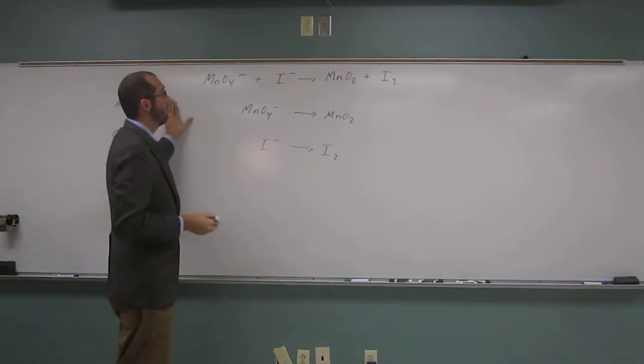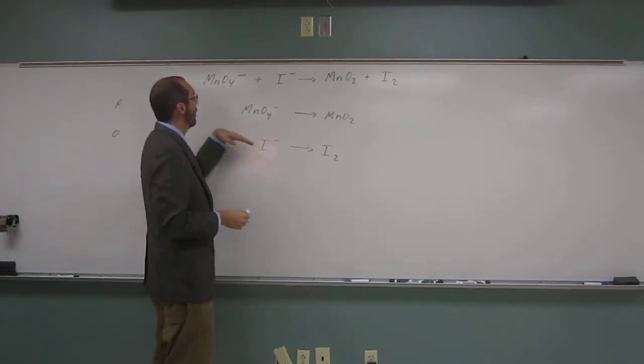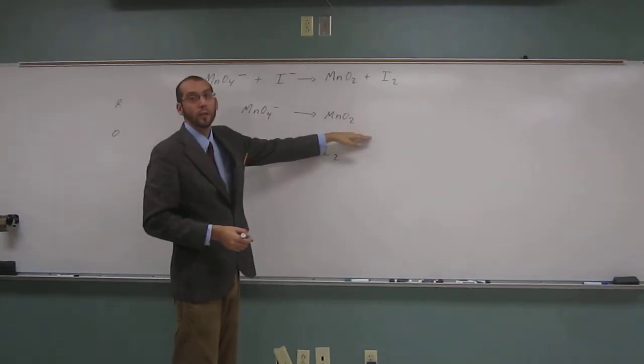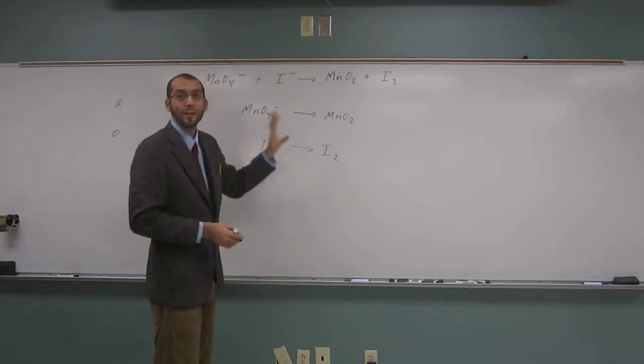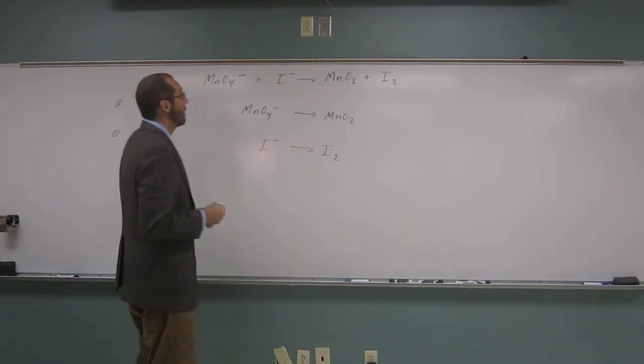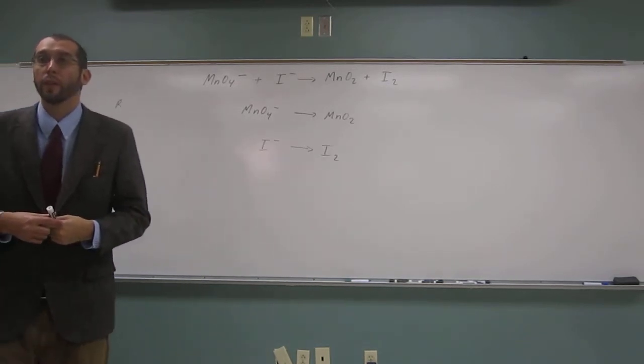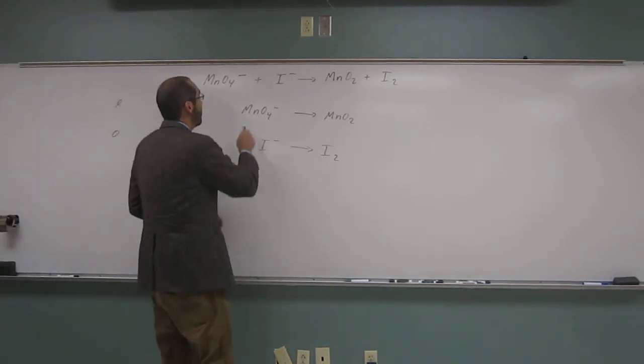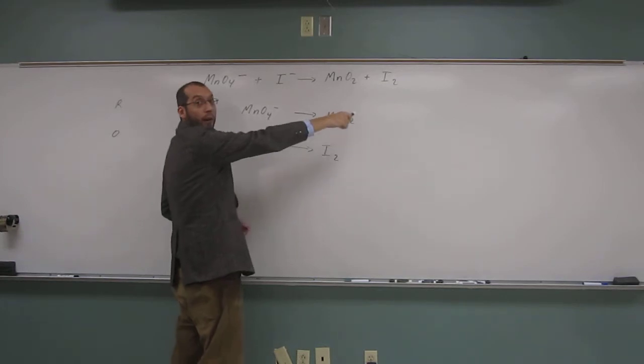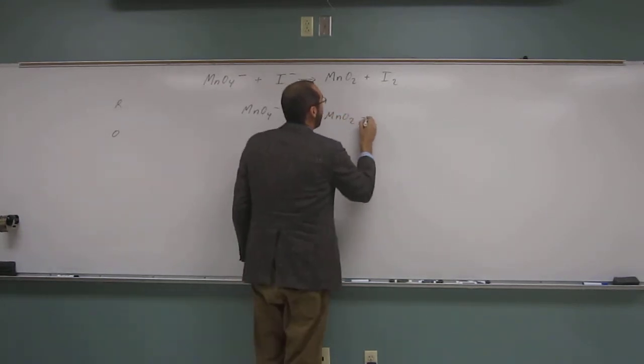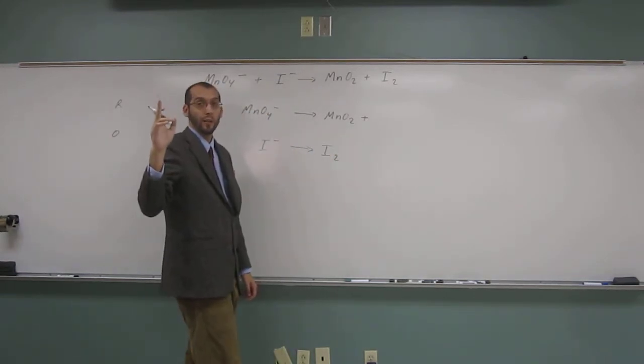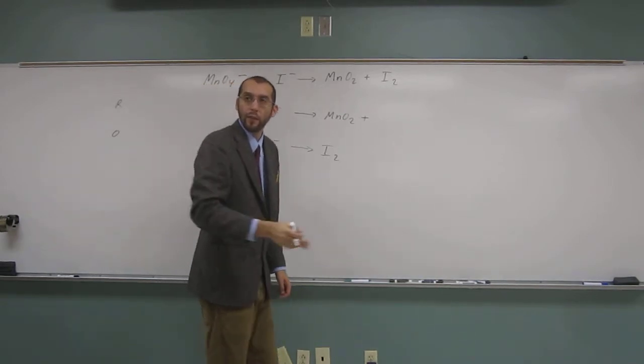Let's go ahead and balance this one. Hopefully you see we have both manganese and oxygen in both of them, but they're not the same amount of oxygens, right? So we need to do something to get our oxygens balanced. So in order to do that, do you remember what we add? We add water molecules. Which side would we add them to? To the right hand side. And how many would we add? Well, water only has one oxygen, so we would need two of them.